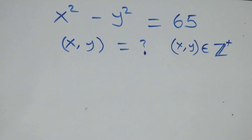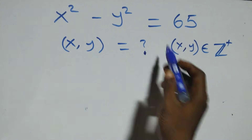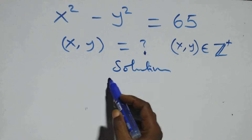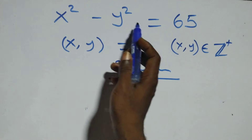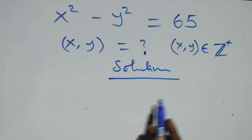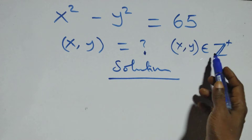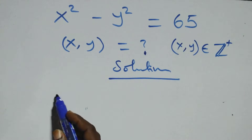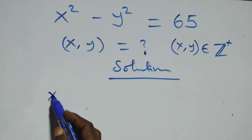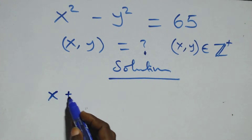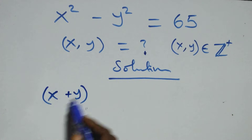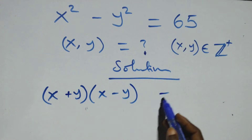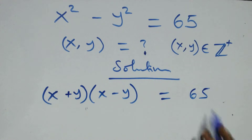Hello, you are welcome. How to solve this nice algebraic equation. What we have here is x squared minus y squared equals to 65. We are finding x and y where x and y are members of the positive integers. We write what we have here: that is, we have x plus y in brackets, open bracket x minus y — the difference of two squares — and that equals to 65.